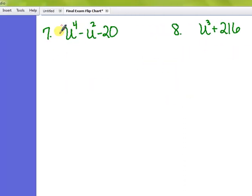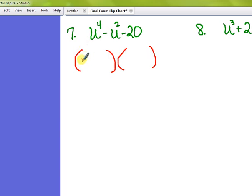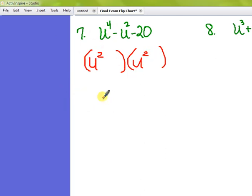Last two. This is unique because we have U to the 4th. If you recall in class, we treated this like a trinomial that was quadratic, only we put U squared and U squared in that first position. When I multiply those together, I get that U to the 4th. I want these two numbers to multiply out to equal negative 20 and the inside numbers to add up to negative 1. That's easy: 5 and 4. To get negative 1, we'll negate the 5 and keep the 4 positive.